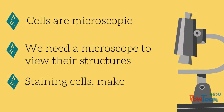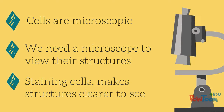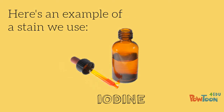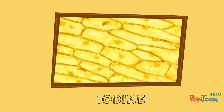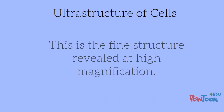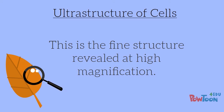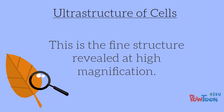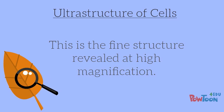Staining makes structures much easier to see. Iodine is a very common stain that is used for this purpose. The full ultra-structure of a cell is rarely seen under a classroom microscope — we need more powerful lenses.